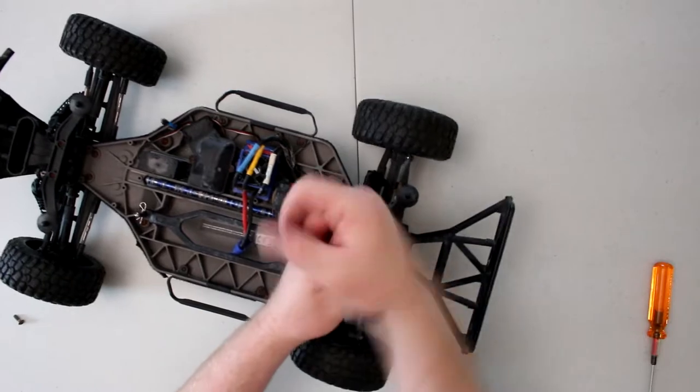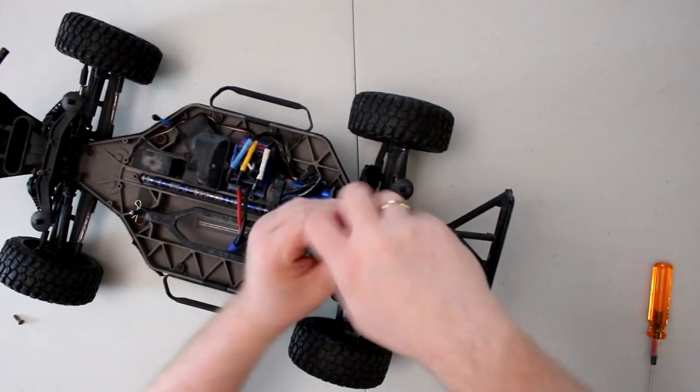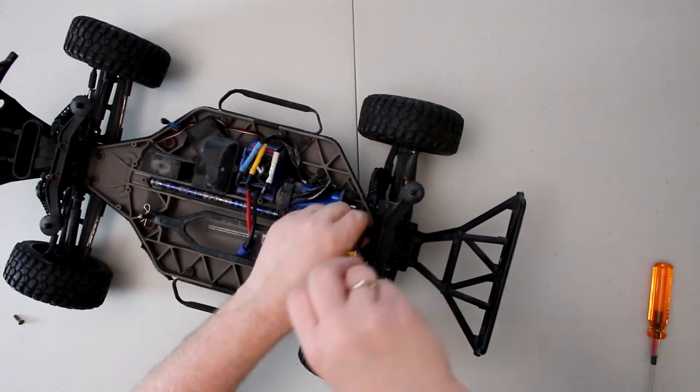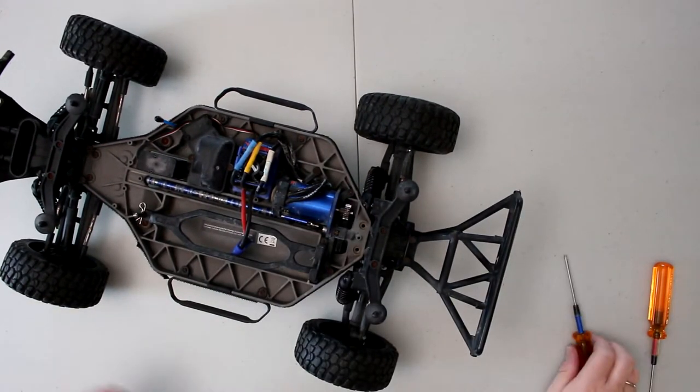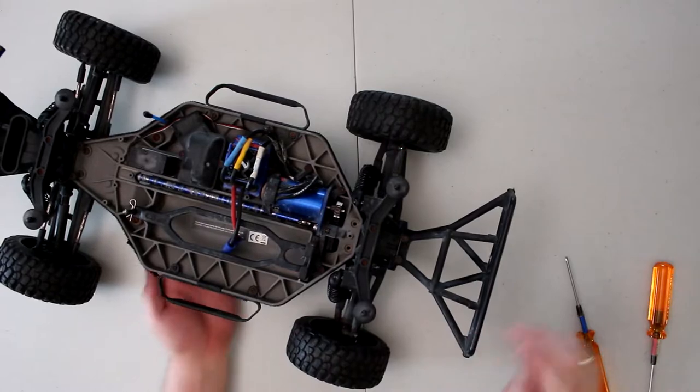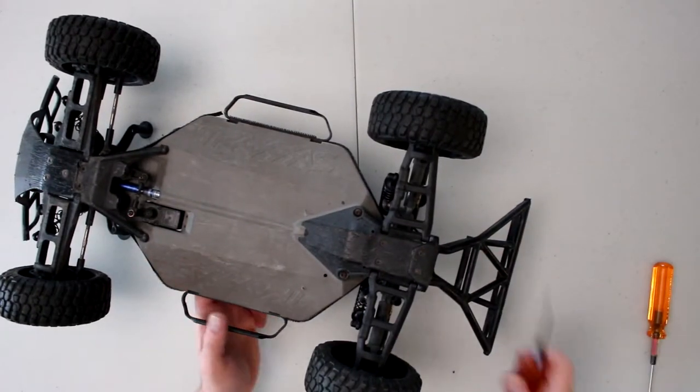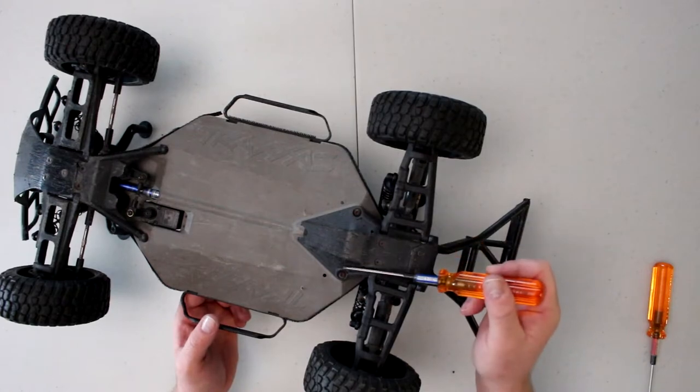Remove this one here too. Put those aside. Now when you do, we're going to flip the vehicle upside down. You will have this one and this one to remove too.